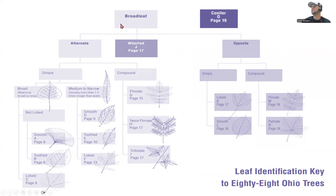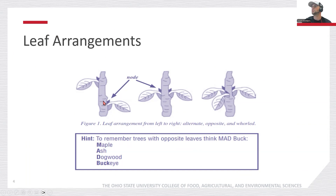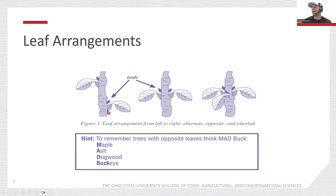The first thing we need to do for our broadleafs is identify the leaf pattern. We have three arrangements: alternate, where leaves alternate on different sides; opposite, where they mirror each other on each side; and whorled, where more than two leaves come from one point all the way around the branch. These attachment points are called nodes, and even on a bare branch with no leaves, the nodes will tell us whether it's alternate, opposite, or whorled.